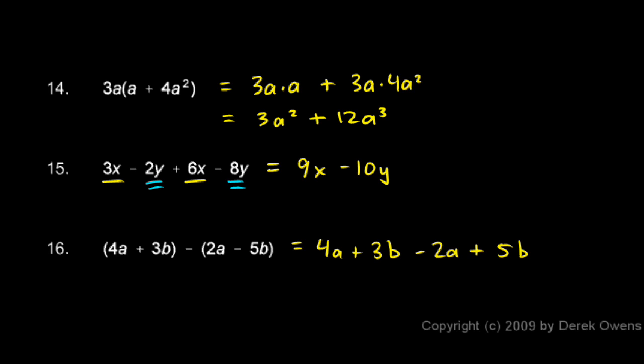Now we need to combine like terms. We have 4a and negative 2a - those combine to give us 2a. And we have 3b and 5b - those are both positive. Those combine to give us 8b. So 2a plus 8b is the answer.